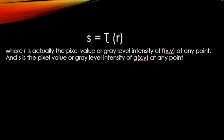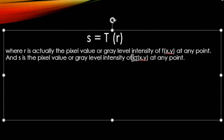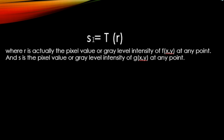The relation between the input image and the processed output image can also be represented as s = T(r), where r is the pixel value or gray level intensity of the input image f(x,y) at any point, and s is the pixel value or gray level intensity of the output image at any point.